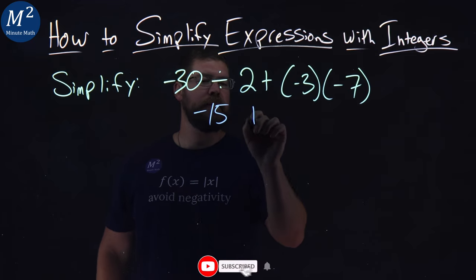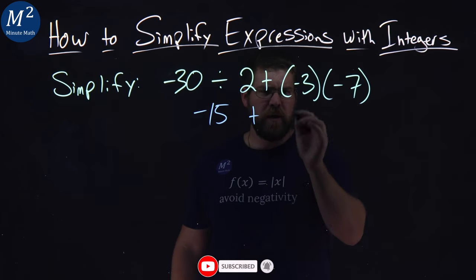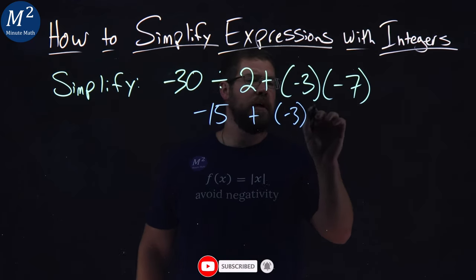which is negative 15. Plus, we can rewrite this: negative 3 times negative 7.